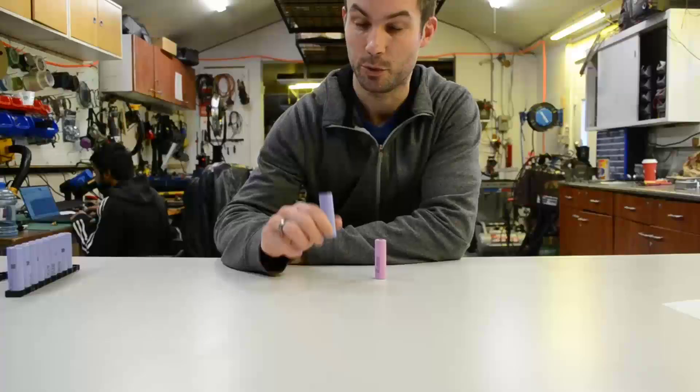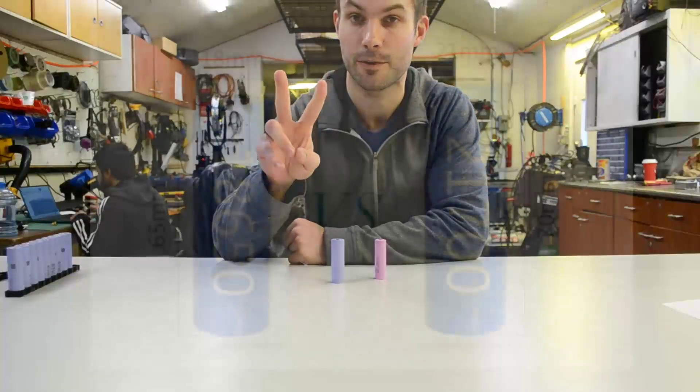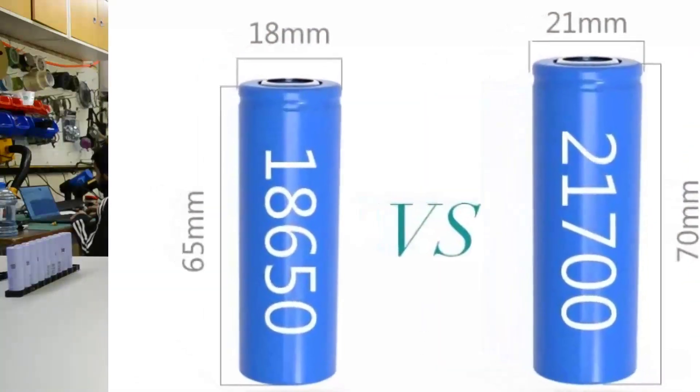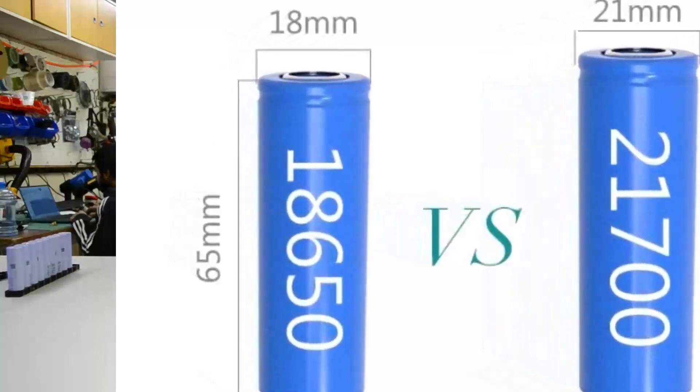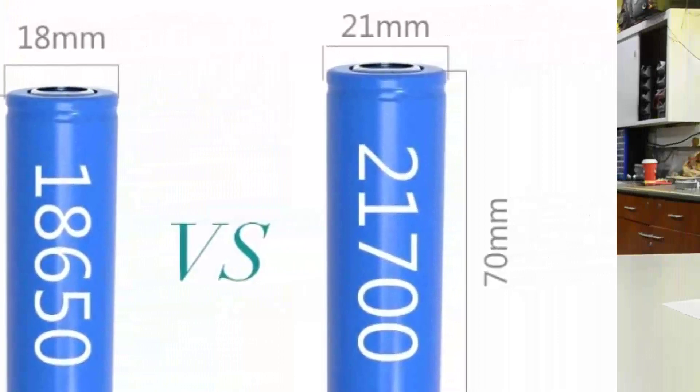There are two main variants for cylindrical lithium-ion cells. We have the 18650, which is an 18 millimeter diameter, 65 millimeter length, and we have the 2170, which is a 21 millimeter diameter, 70 millimeter length.